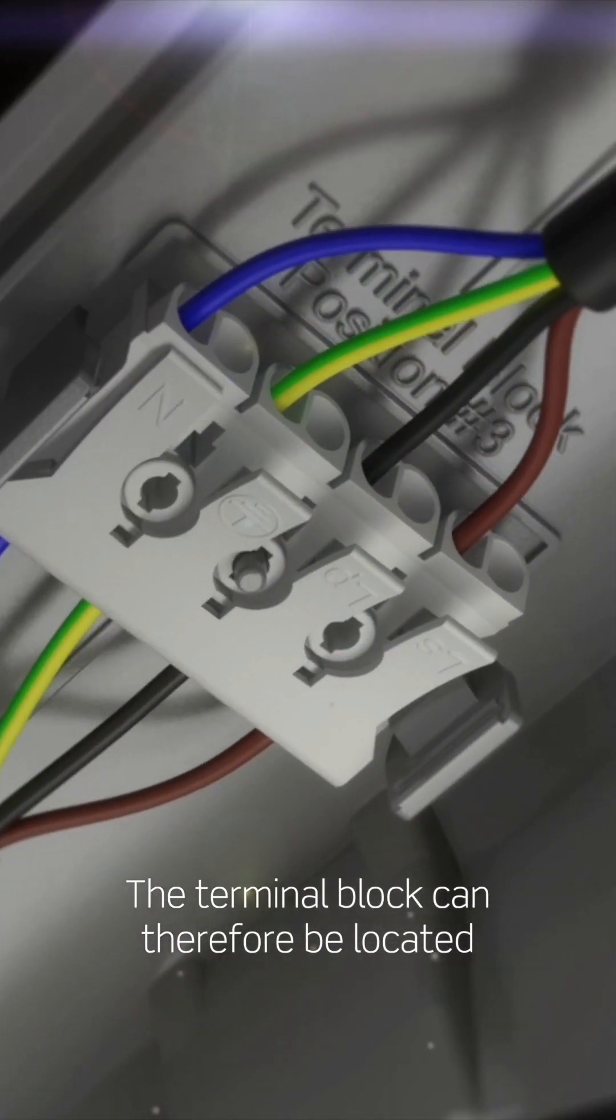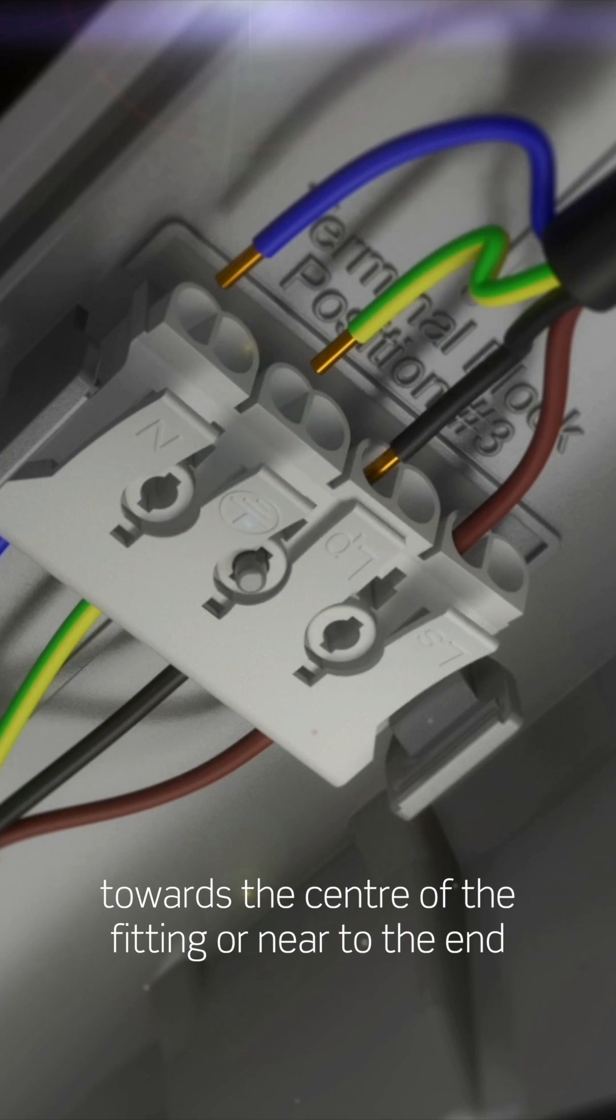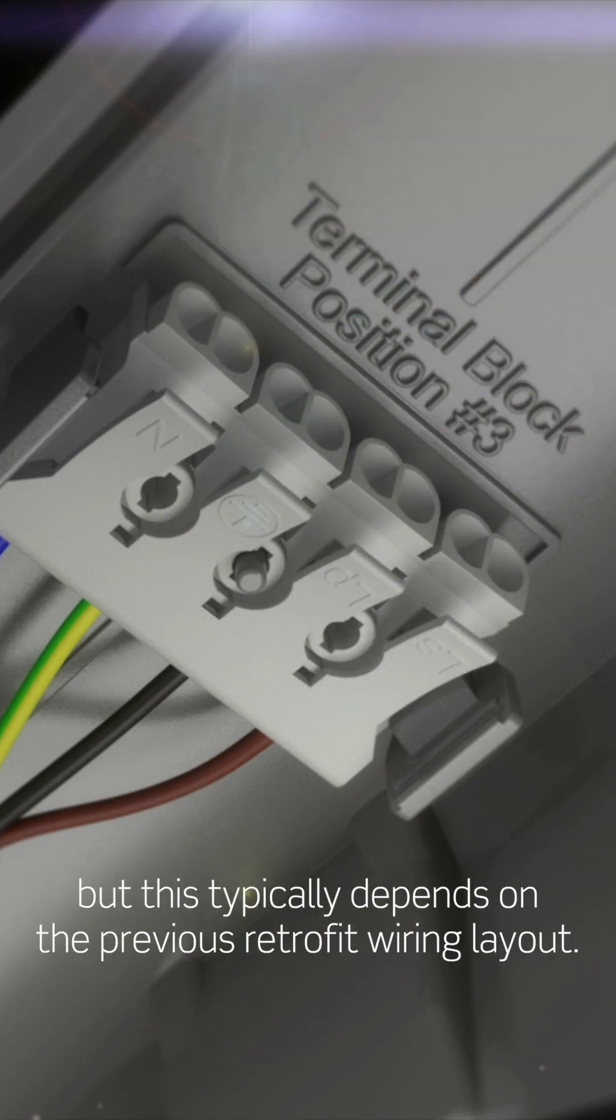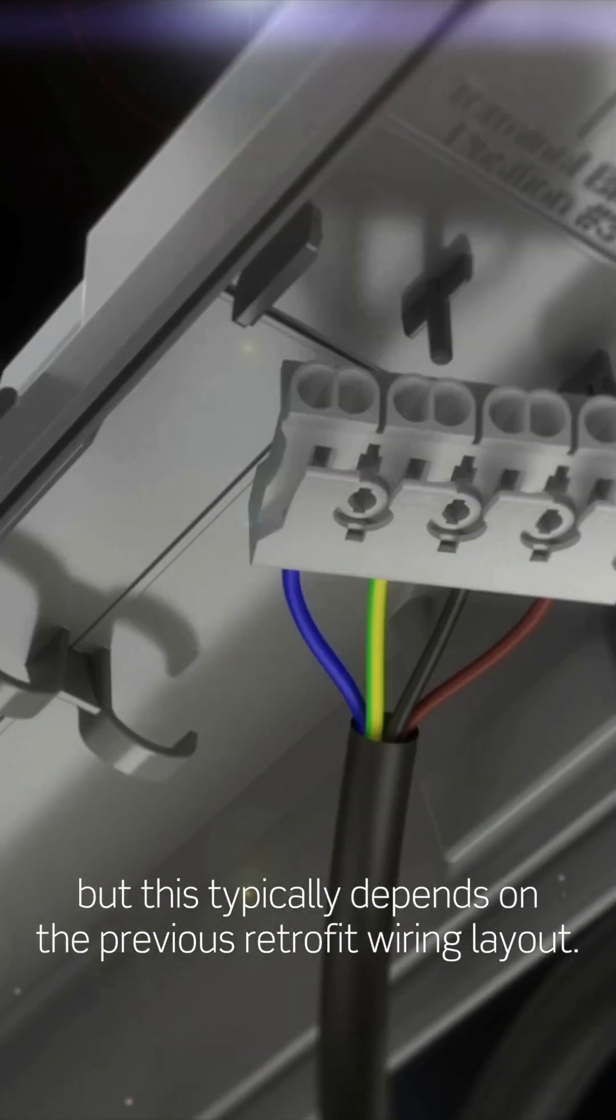The terminal block can therefore be located towards the centre of the fitting or near to the end, but this typically depends on the previous retrofit wiring layout.